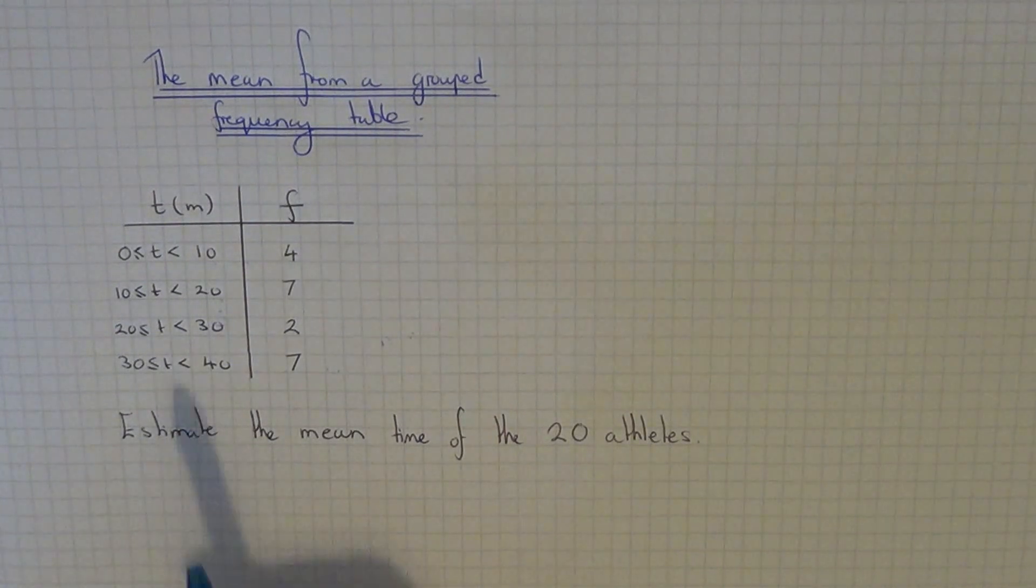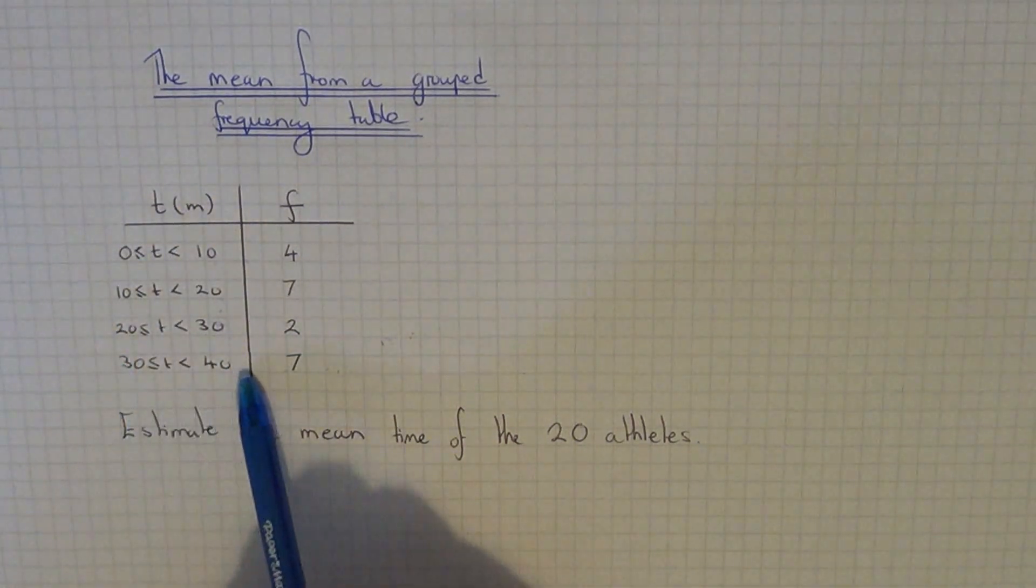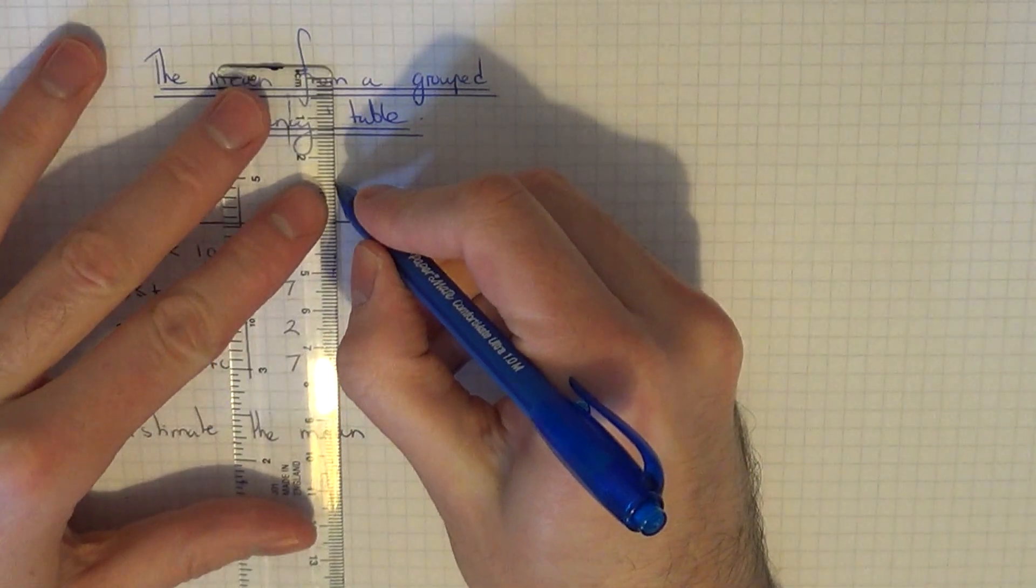The first thing you need to do is work out the midpoints of these groups here. So let's add a new column for the midpoints.